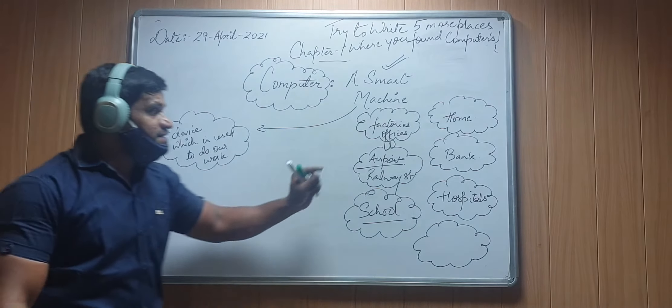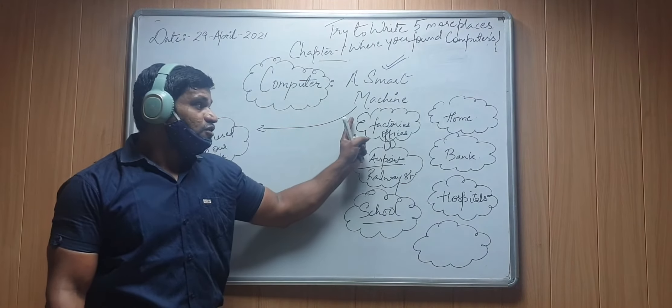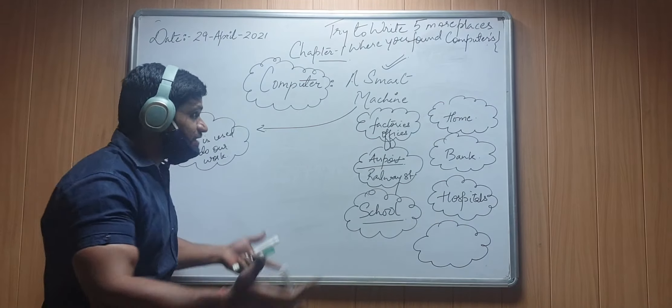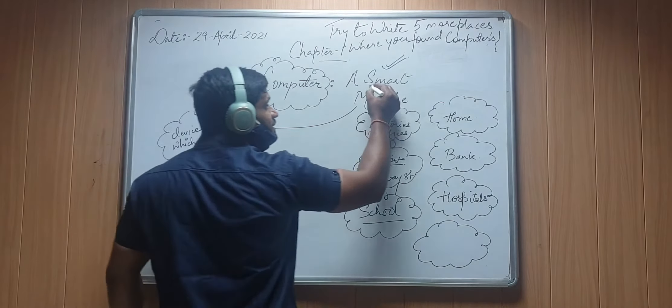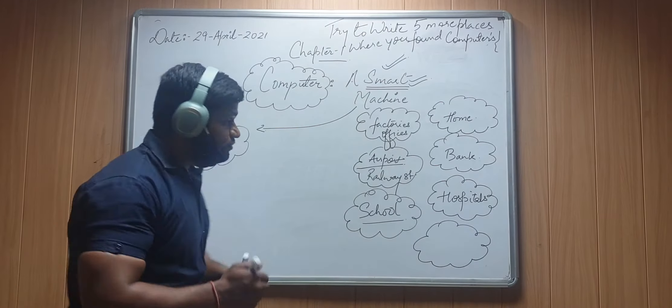As you can see that computer is being used at so many places for doing different work. So yes, computer is a smart machine. Now smart means capable of doing different work efficiently, properly, correctly, without any mistake, repetitively, and in less time. So computer can do many works at same time, at same point, and hence it is known as your smart machine.